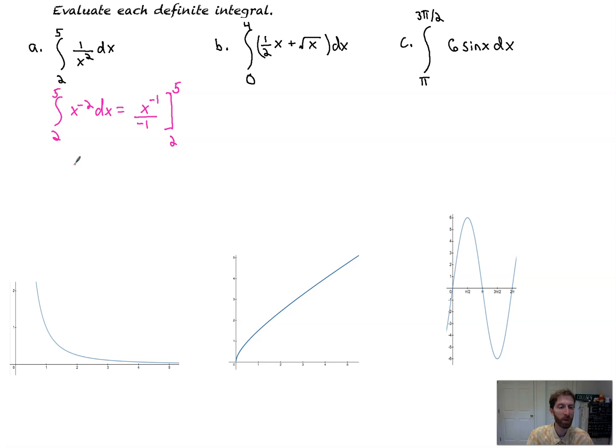I'm going to get rid of that negative exponent, so it's going to be negative one all over x, evaluated from 2 to 5. That's equal to negative one-fifth. That minus is part of the Fundamental Theorem, f(b) minus f(a). Minus one over two.